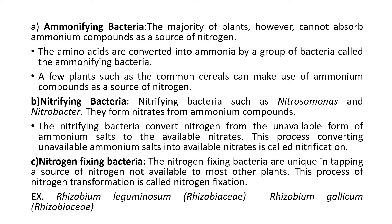Secondly, nitrifying bacteria such as Nitrosomonas and Nitrobacter form nitrates from ammonium compounds. The nitrifying bacteria convert nitrogen from the unavailable form of ammonium salts to the available form of nitrates. This process of converting unavailable ammonium salts into available nitrates is called nitrification. These all come up in the nitrogen cycle as well — showing how nitrifying bacteria are useful in completing the nitrogen cycle over time.